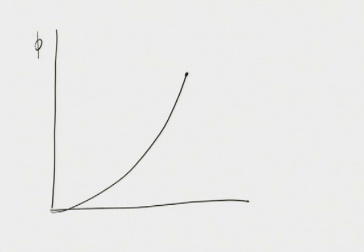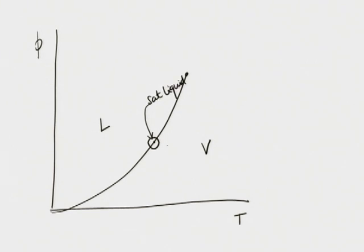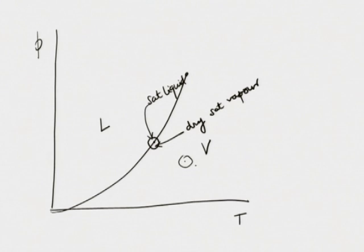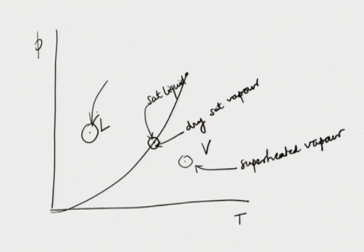Sketch the P-T diagram. On the left side is liquid, on the right side is vapour. On the saturated point we have saturated liquid. On the far end we have dry saturated vapour. A vapour which is anywhere beyond that is known as superheated vapour, and a liquid anywhere on the left is known as subcooled liquid or compressed liquid.